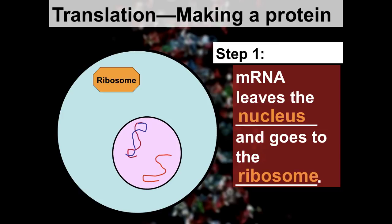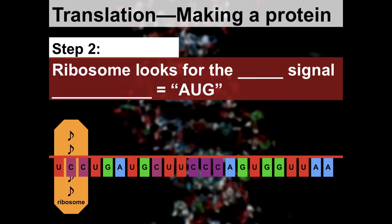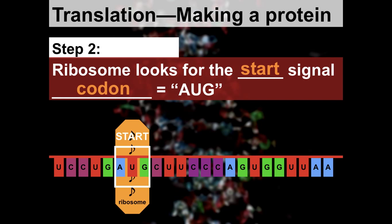Step one: the mRNA leaves the nucleus and goes to the ribosome, which is in the cytoplasm and is where proteins are made. The ribosome reads the mRNA to add amino acids to make the protein. Step two: the ribosome looks for the start signal — a codon called AUG. The ribosome won't start doing anything until it hits that AUG start codon.